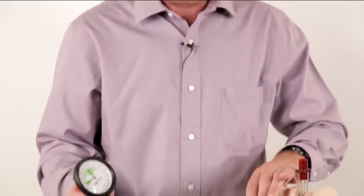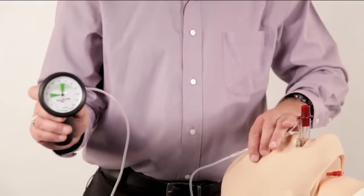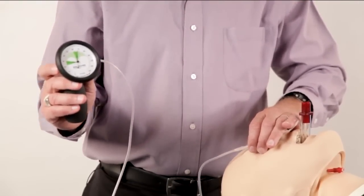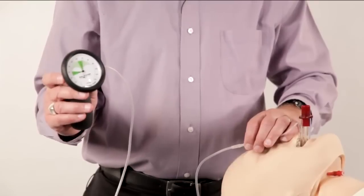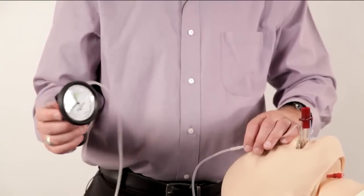If the King Airway is going to be left in place for an extended period of time, more than a couple hours, it just makes common sense to make sure that the cuffs are not over-inflated. We recommend using 60 centimeters of water pressure for the cuffs. This is a nice balance between getting a good ventilatory seal and not creating long-term sequela.